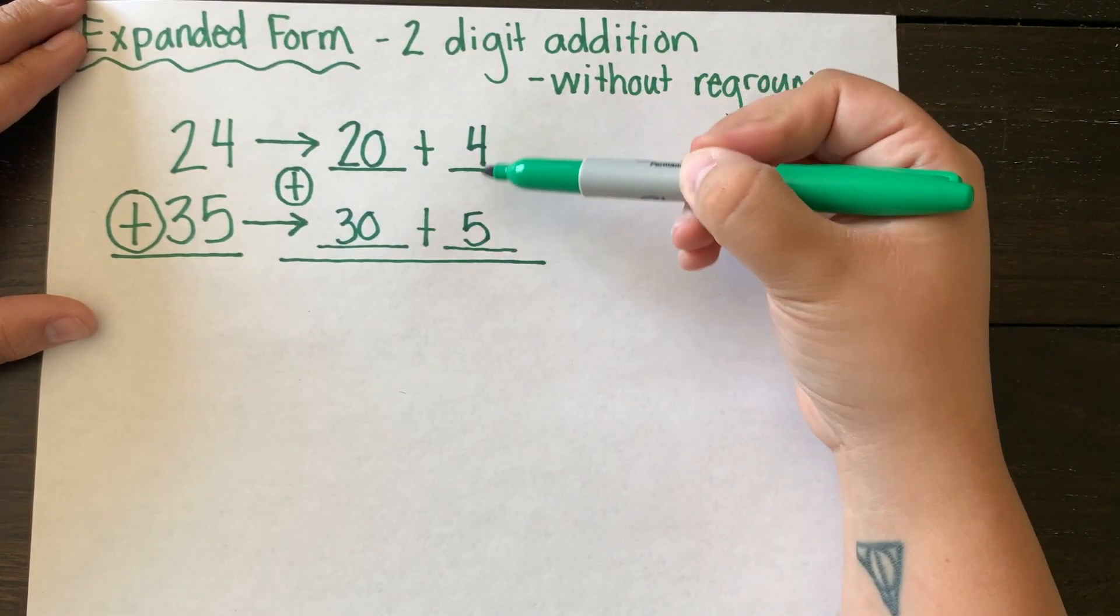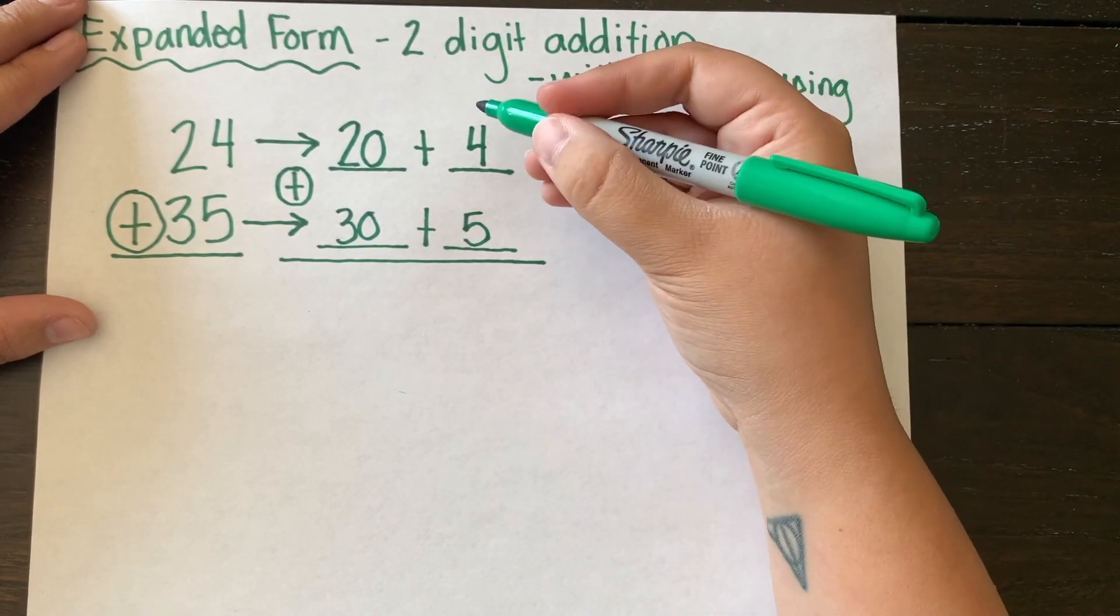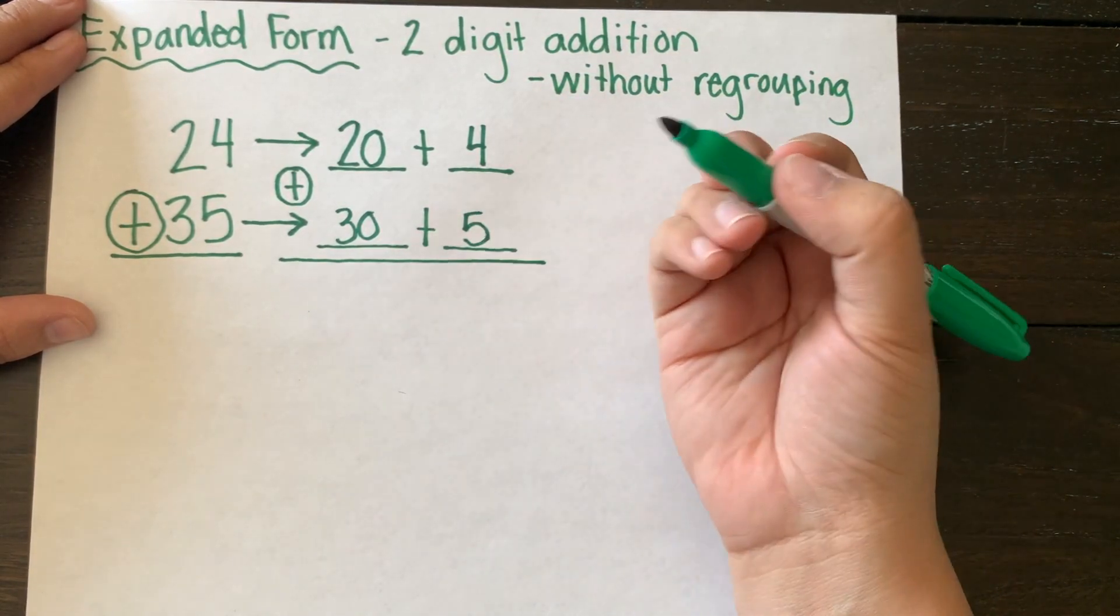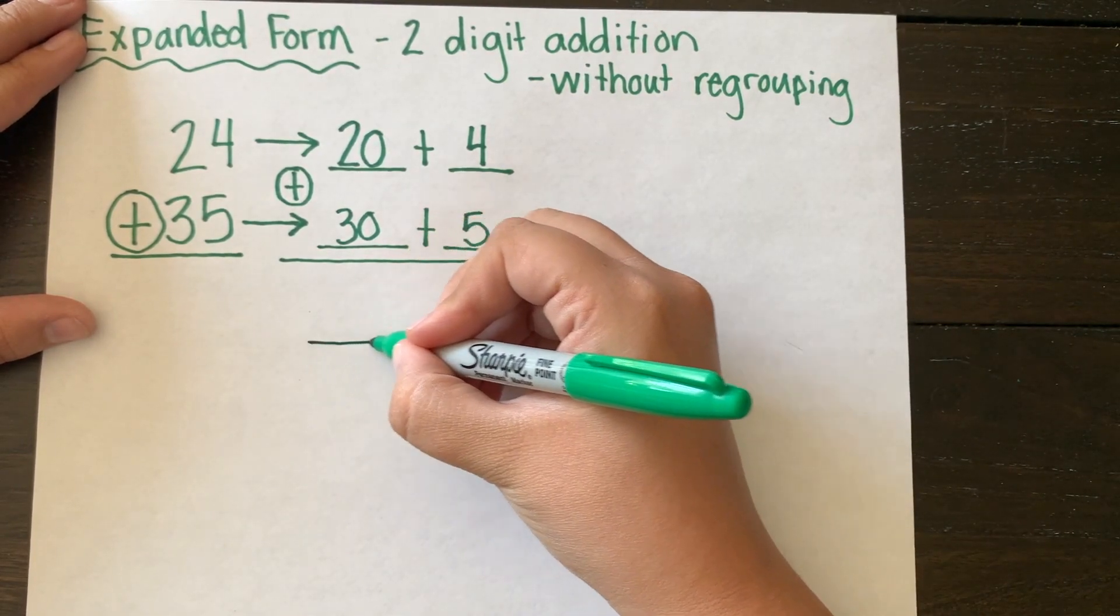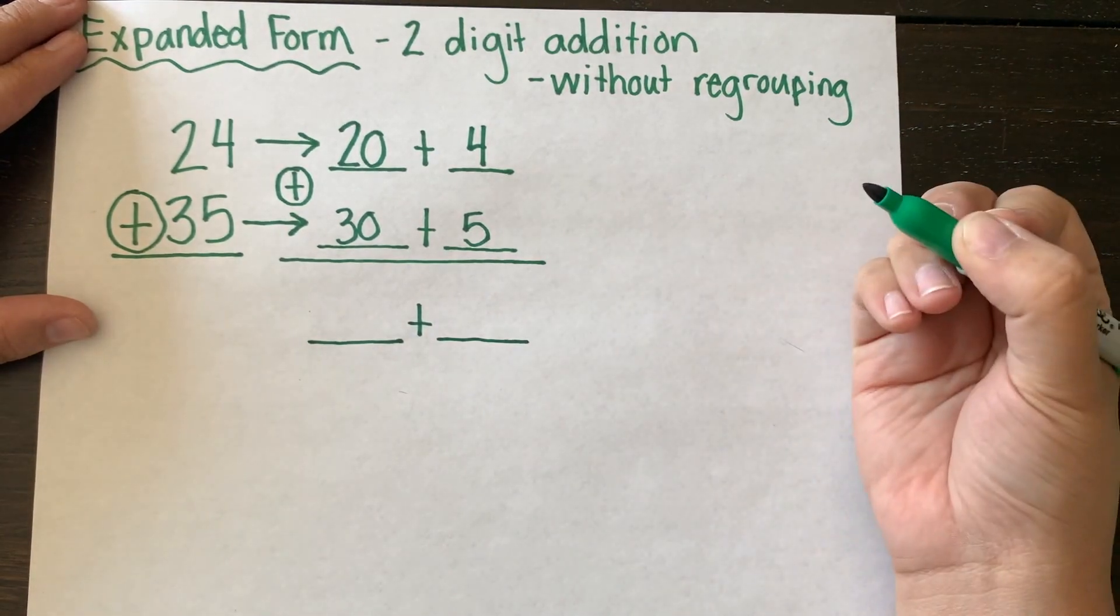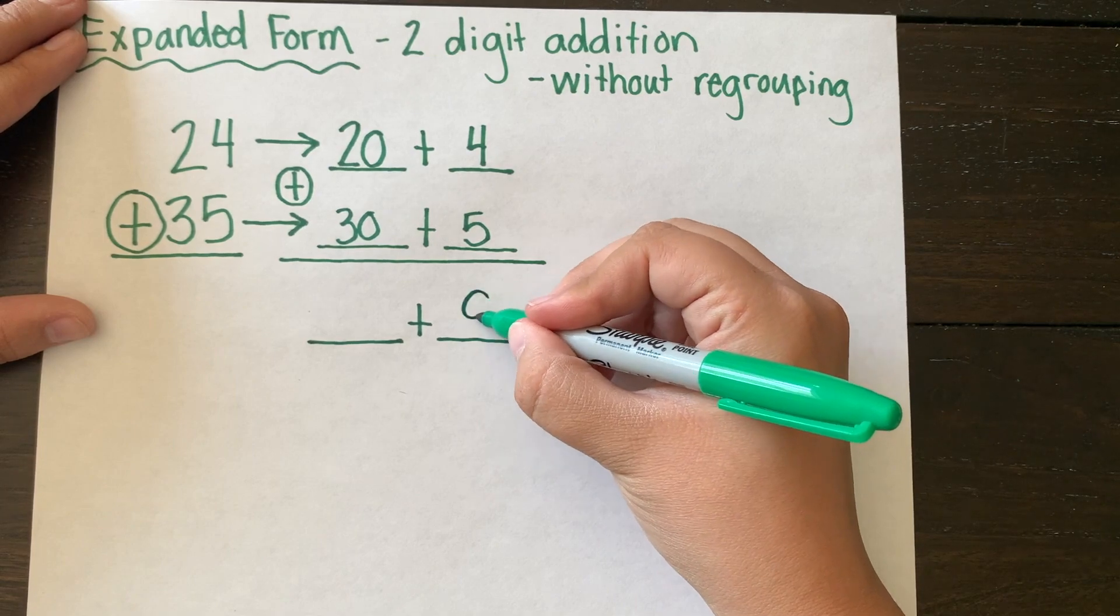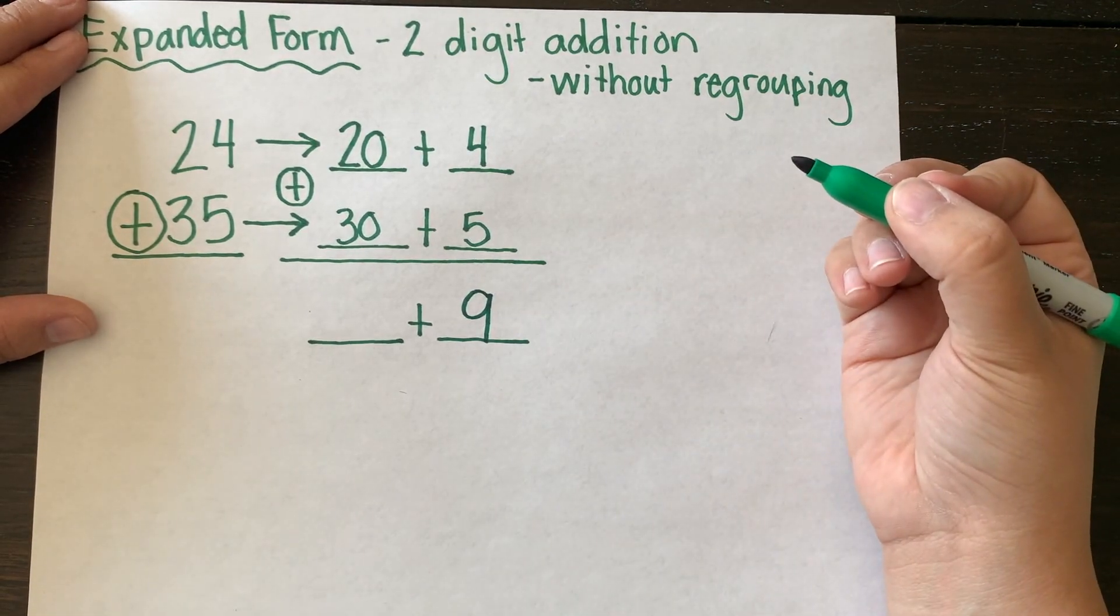I see that it is an addition problem, so I'm going to be adding my ones column first. Now before I add, I'm going to draw on my placeholders again. You do not have to do this, but it is a good idea if you are still struggling with expanded form. So 4 plus 5 equals 9.